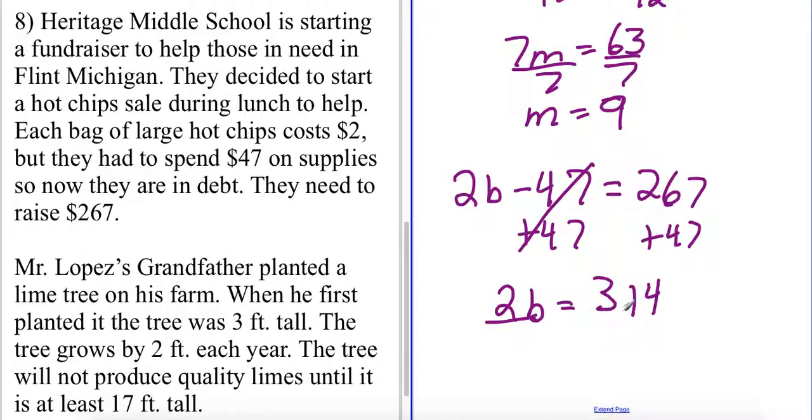So now I'll divide both sides by my coefficient of 2 and I'll get that the number of bags is equal to 157. So in order for them to reach their goal of 267 they need to sell 157 bags.